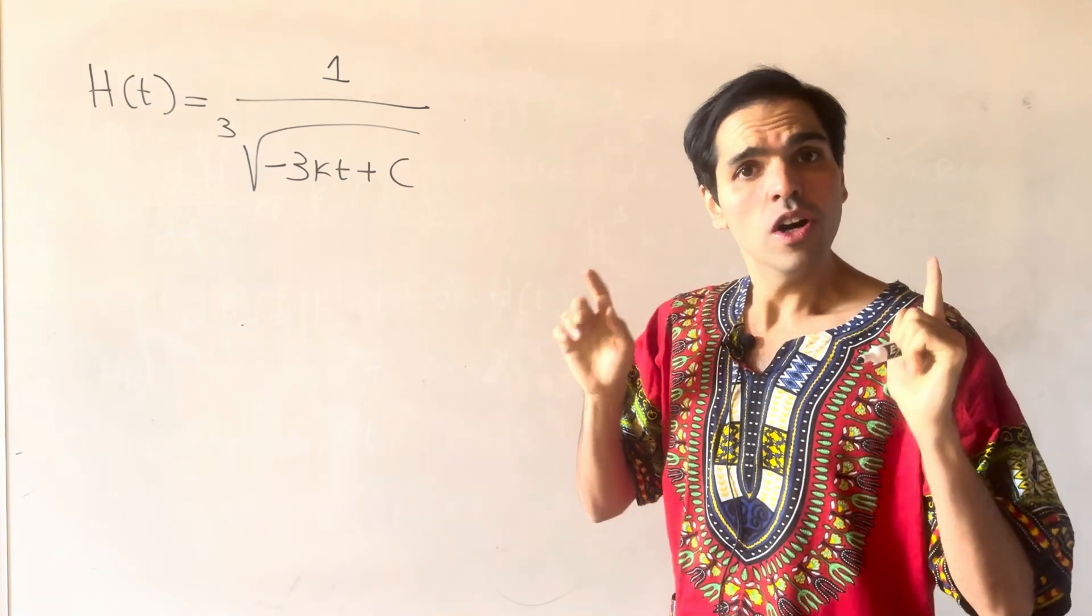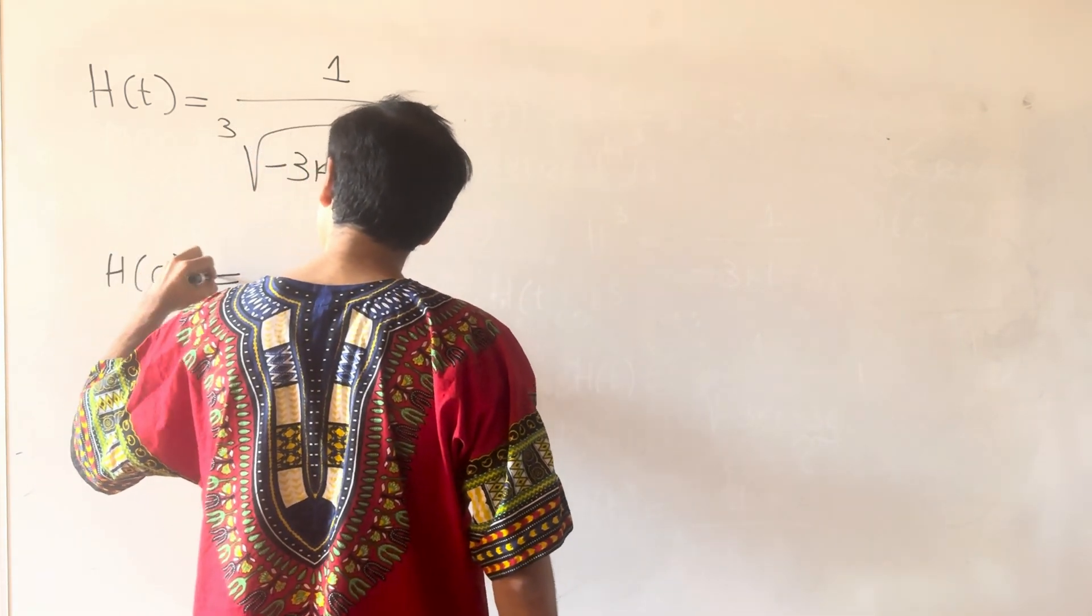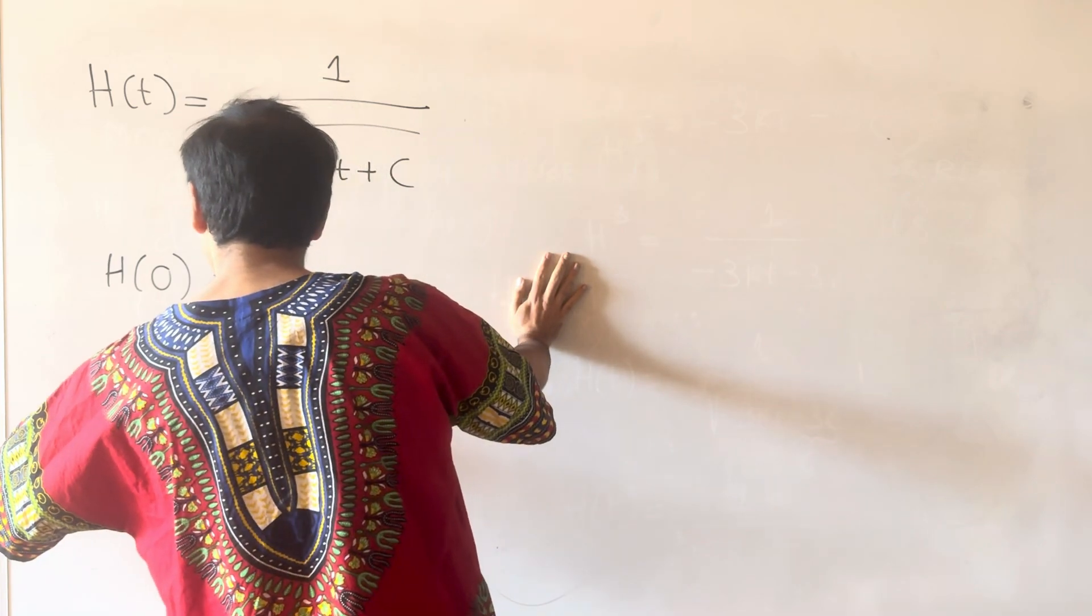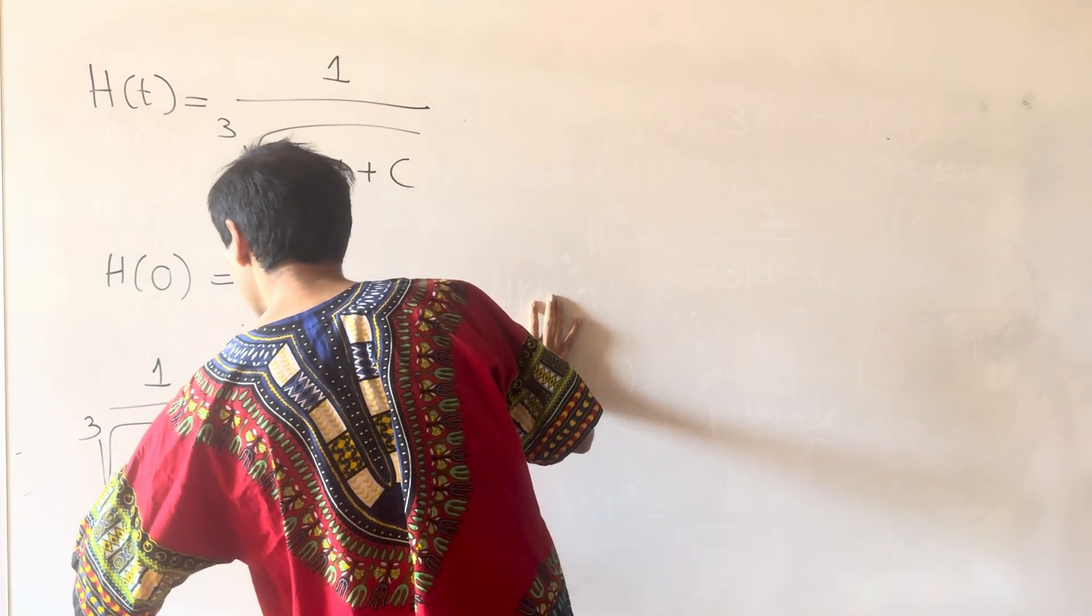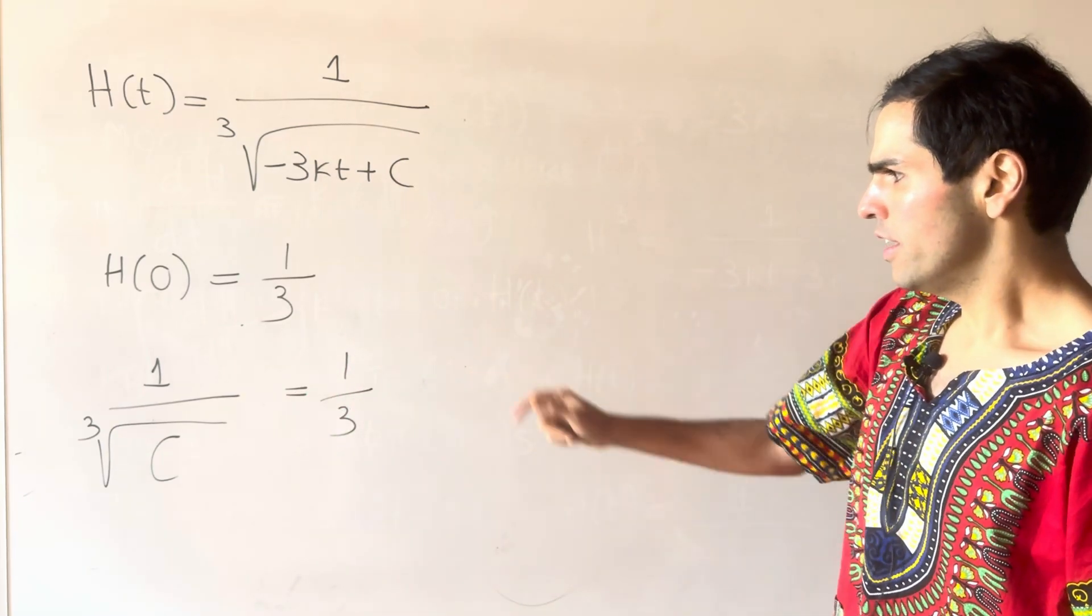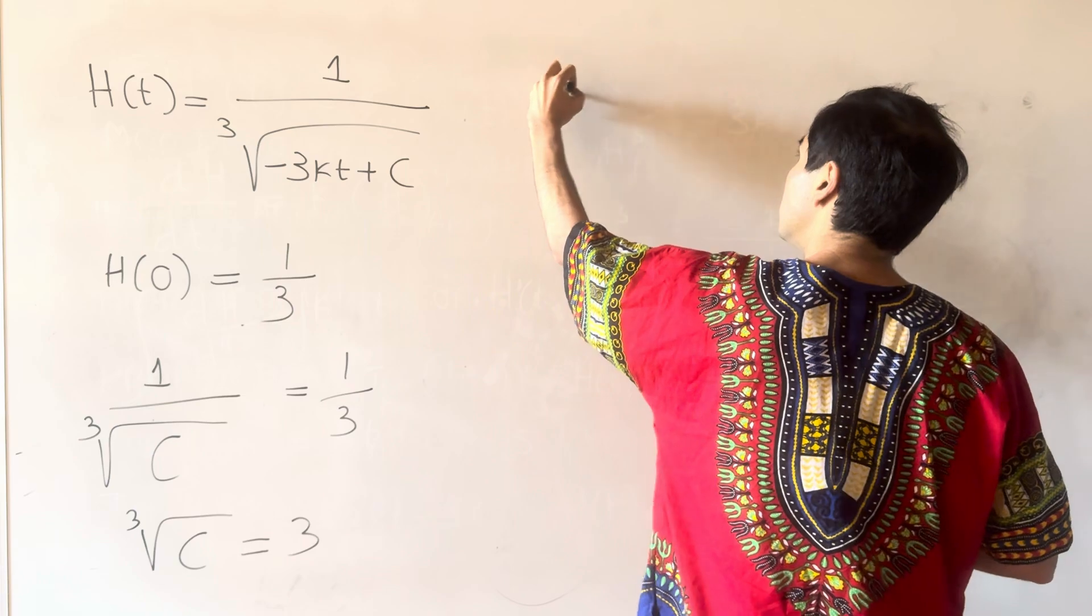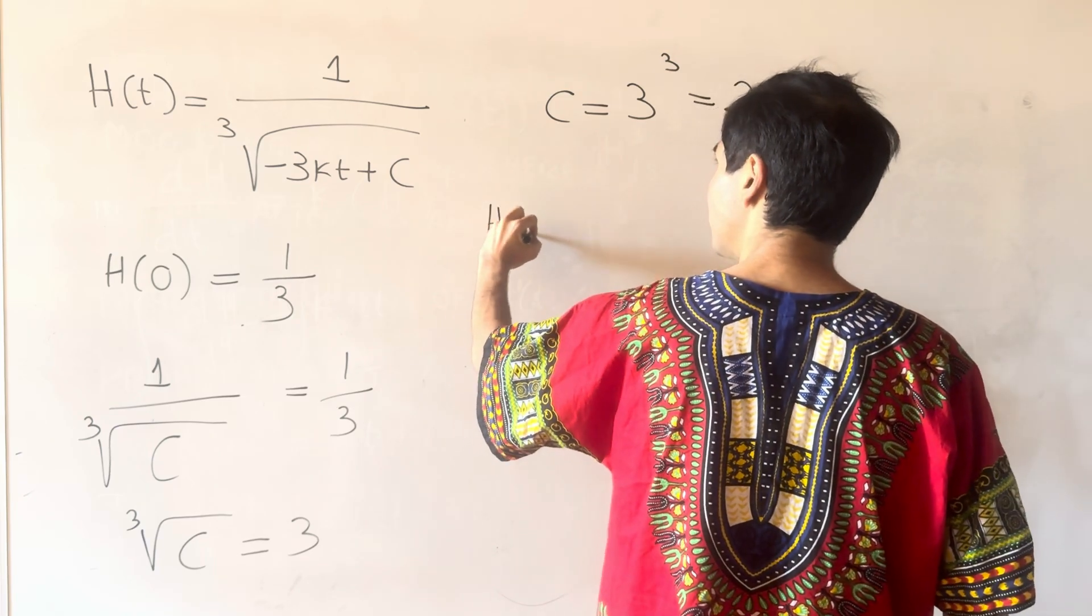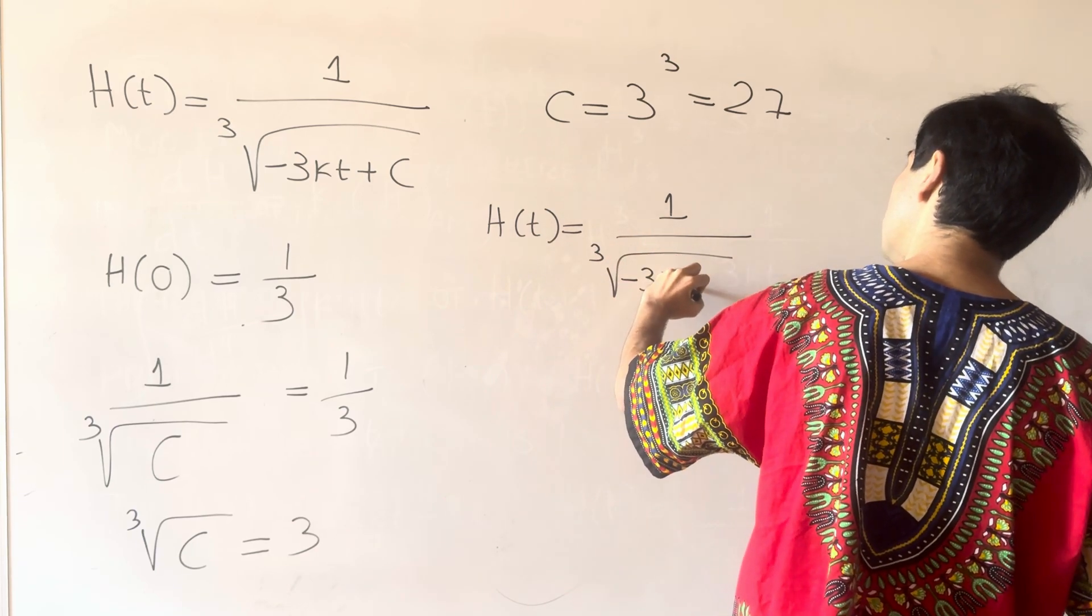Okay, so now, what do we know? We know that happiness at 8 a.m. is one-third utils. In other words, H of 0 is one-third, because T is the number of hours after 8 a.m. And so, what we get is 1 over cube root of C equals one-third. And then, in other words, cube root of C is 3, and so C is 3 cubed, which is 27. So, that's already very good. So, H of T is 1 over cube root of minus 3K dT plus 27.